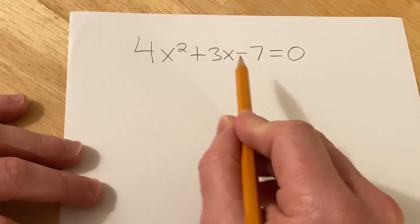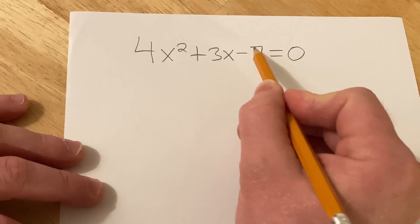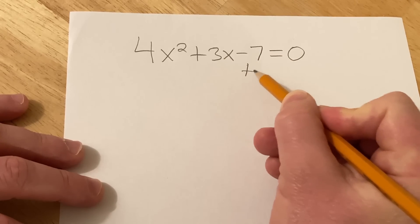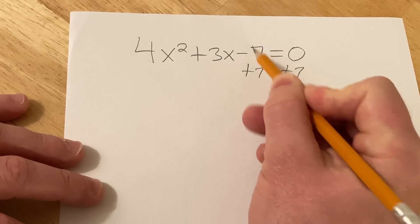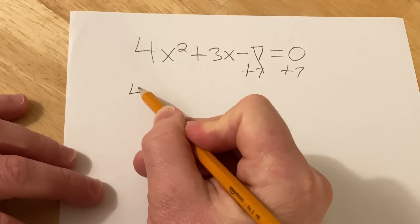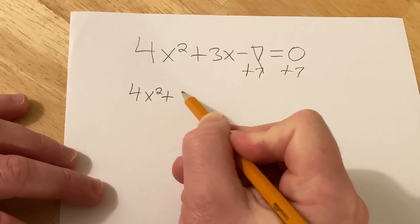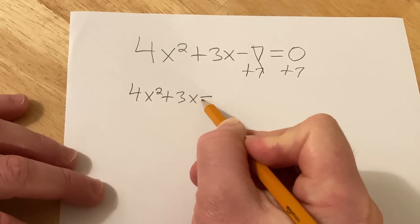So the first step is to take your quadratic equation and get rid of the constant term. Just add it to the other side. So plus 7, plus 7. So we have 4x squared plus 3x and that's equal to 7.